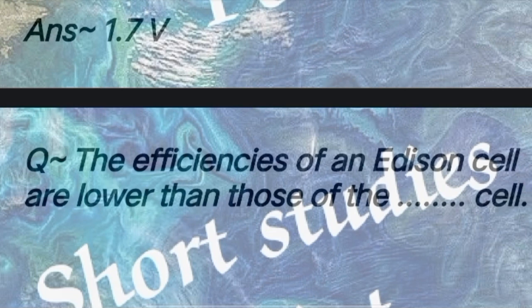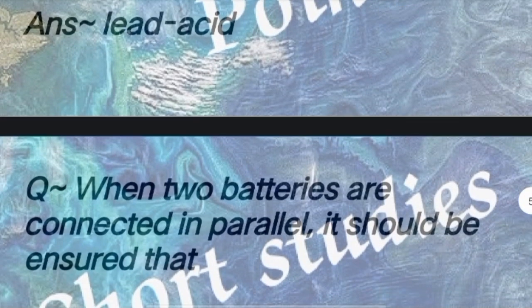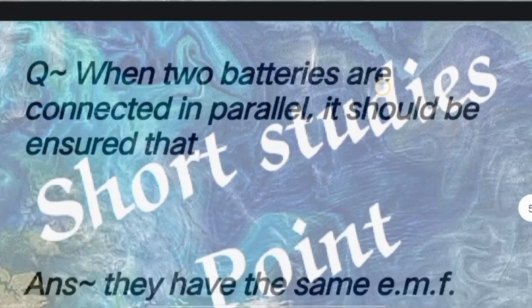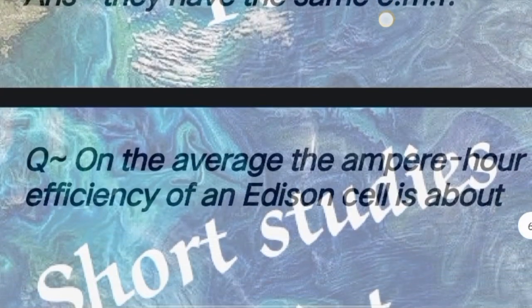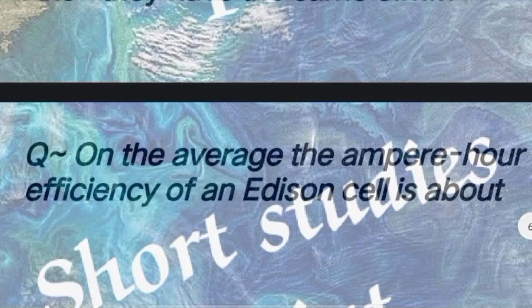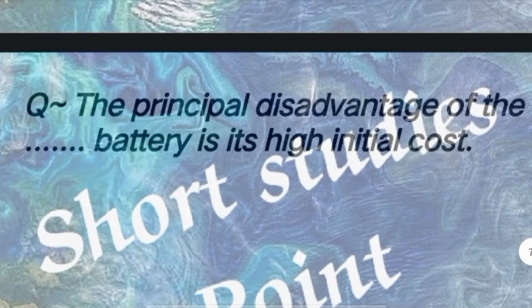Next question: The efficiencies of Edison cells are lower than those of the dash cell. Answer: Lead acid cell. Next question: When two batteries are connected in parallel, it should be ensured that they have the same EMF. Next question: On the average, the ampere-hour efficiency of an Edison cell is about. Answer: 80 percent.